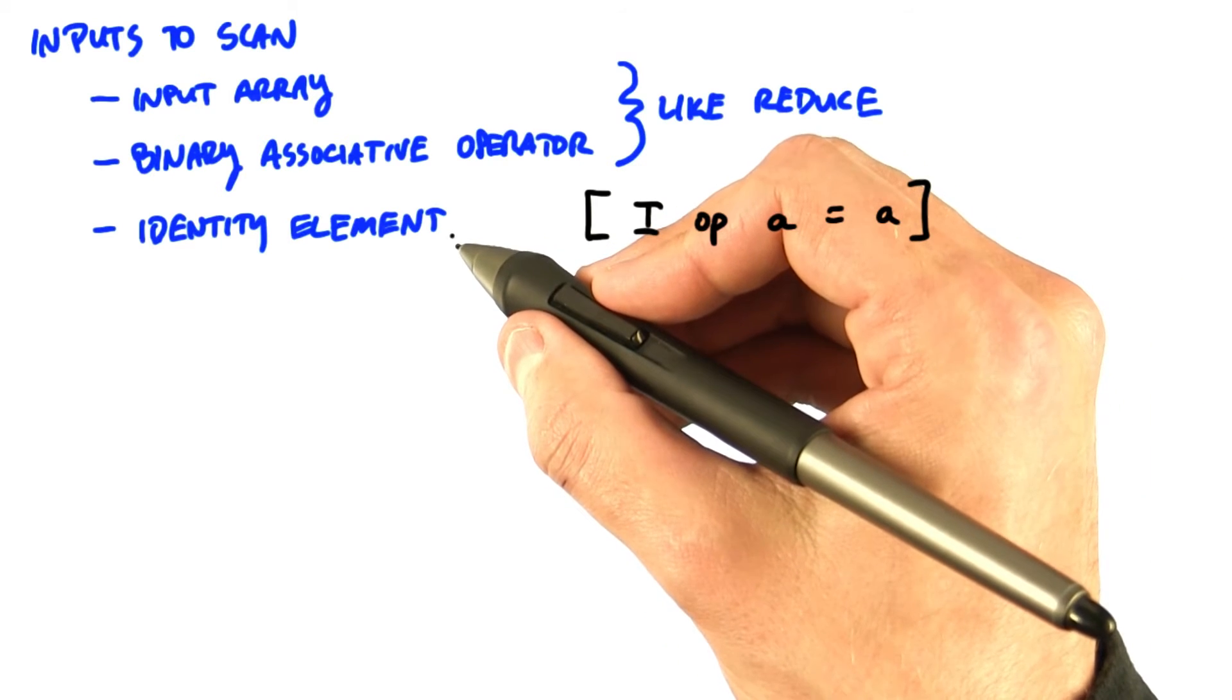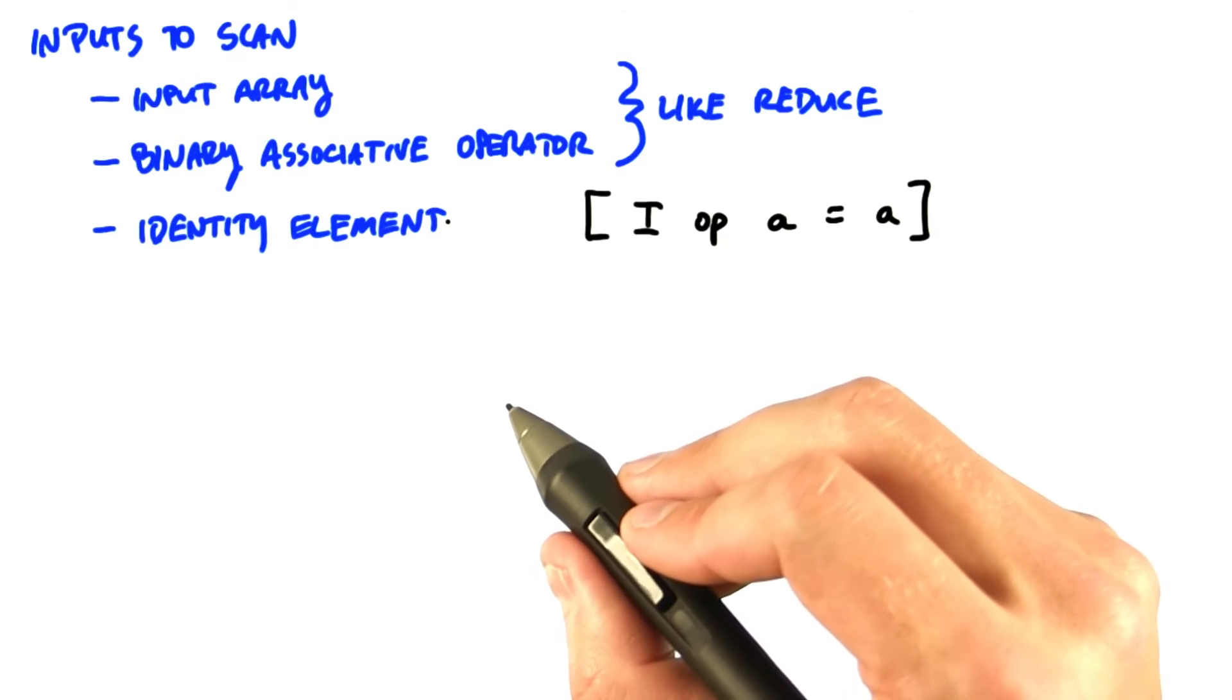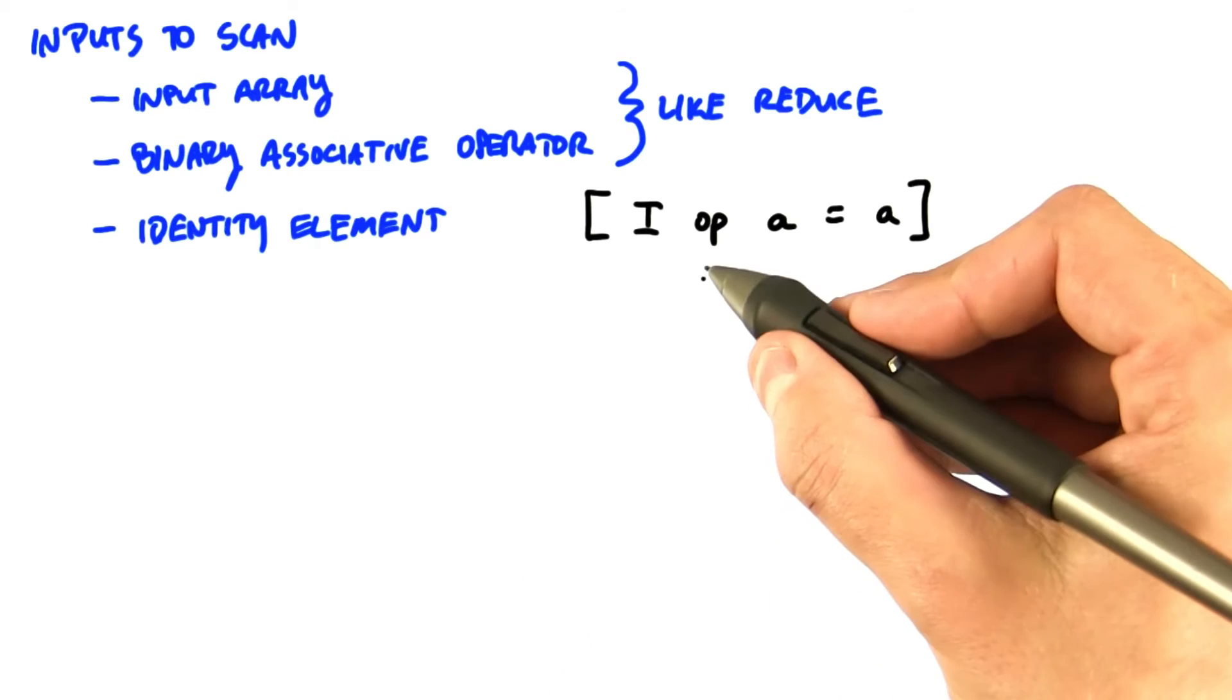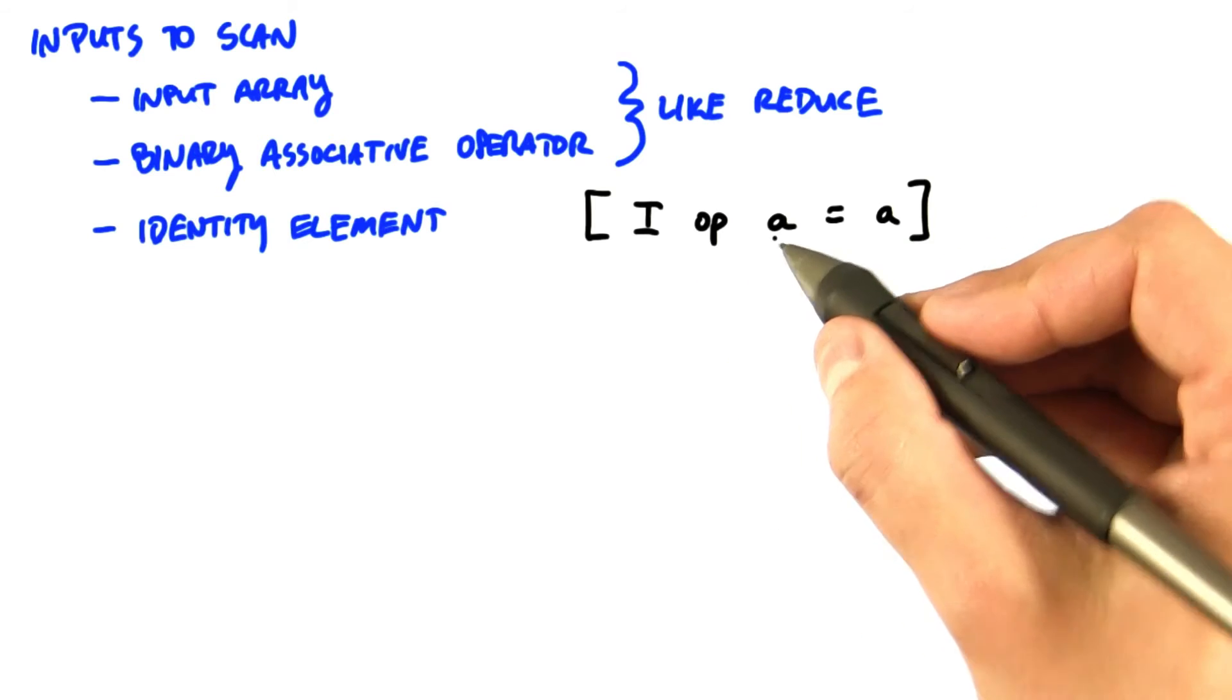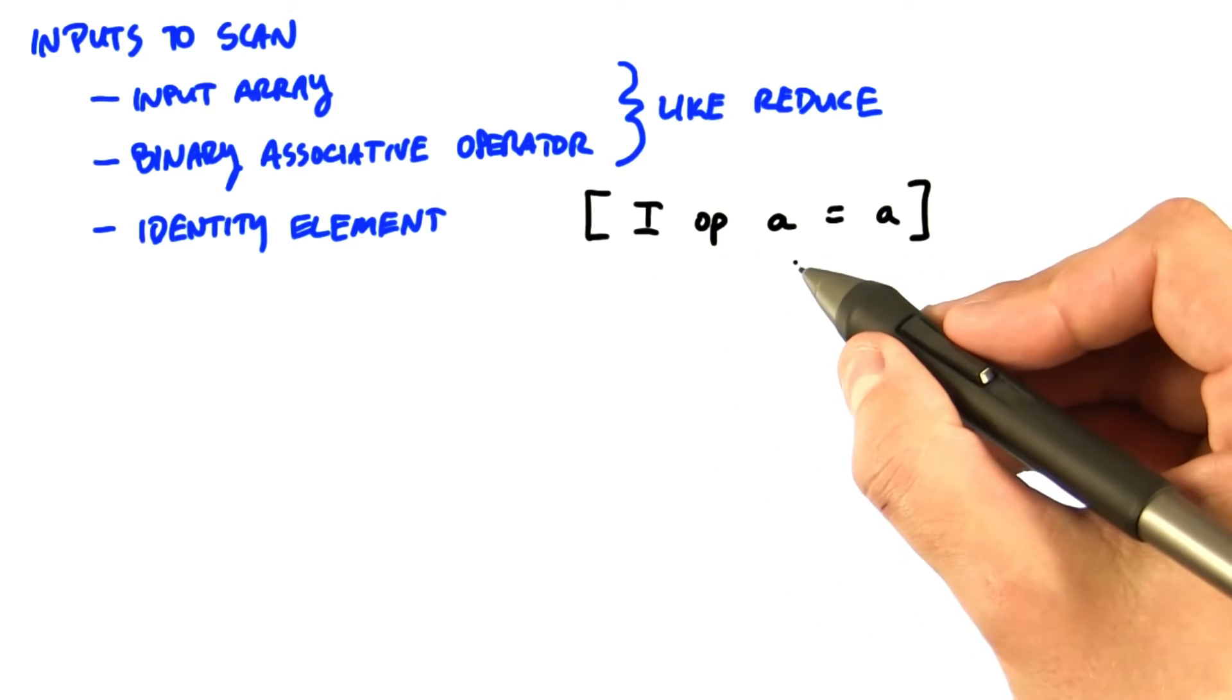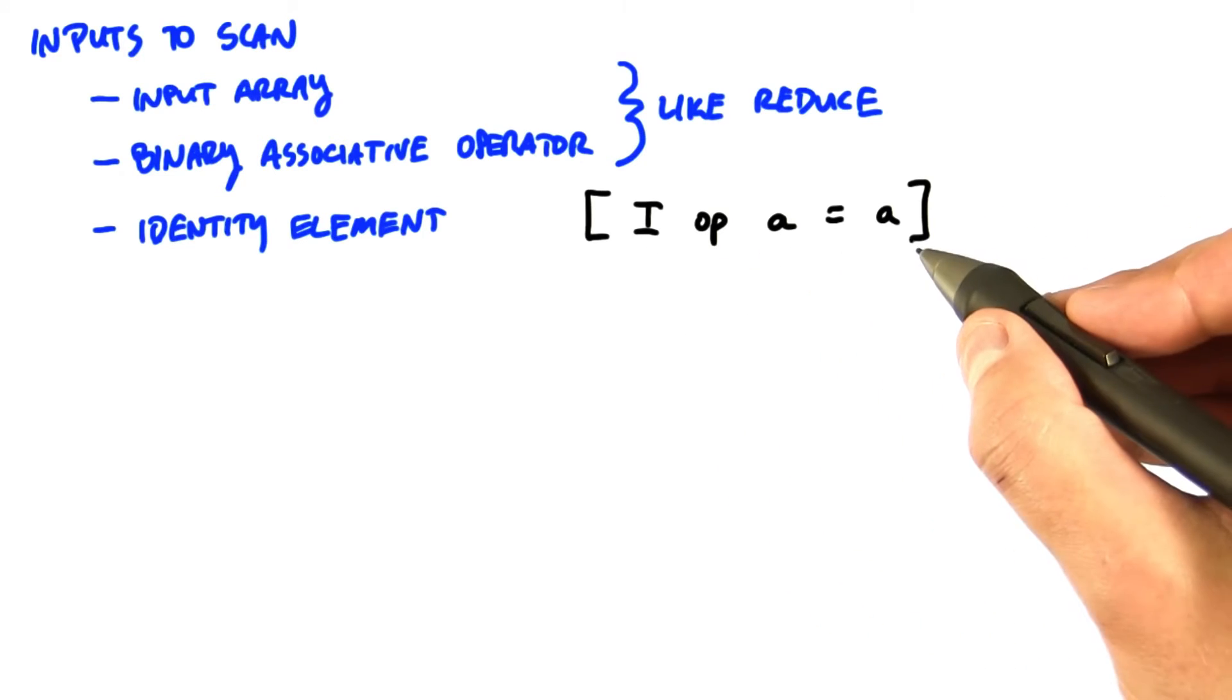Now, scan also requires a third input, an identity value associated with the binary operator. So for any operator op, i op a, where i is the identity element and a is any value, always gives you back a.